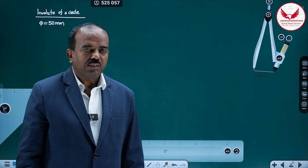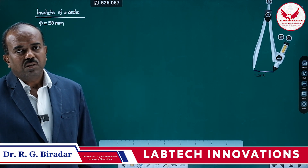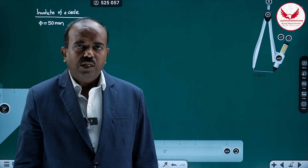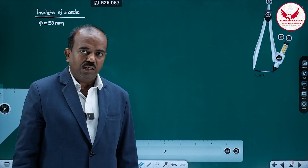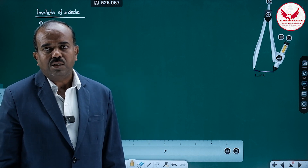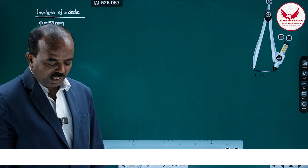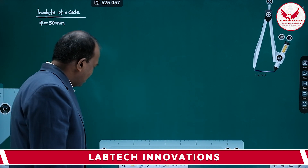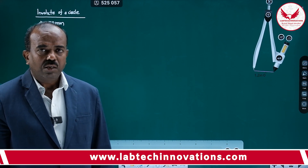Hello friends. Now we will see how to draw the involute of a circle. When some string is wrapped around the circumference of a circle and we keep one end of the string fixed on the circle and open the other end by keeping the string always tight, then the path traced by that end is nothing but the involute curve. Only one thing is required: the diameter or radius of a circle. Let us consider radius 25mm or diameter 50mm, and with that we will draw the involute.